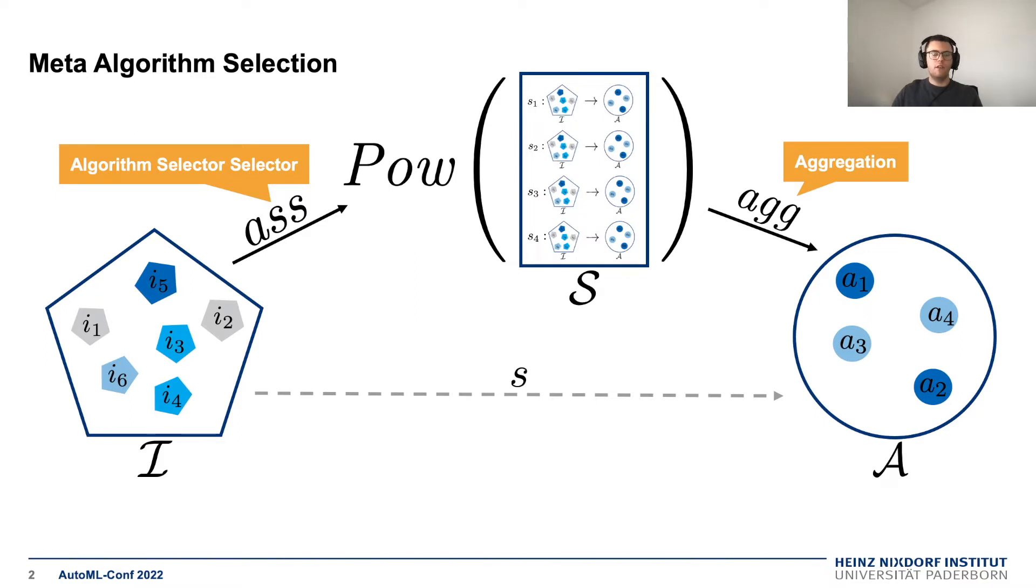The idea behind meta algorithm selection is that there are many algorithm selection solutions already available, and the question is: can we combine these in a clever way to leverage their combined power and come up with a more effective algorithm?